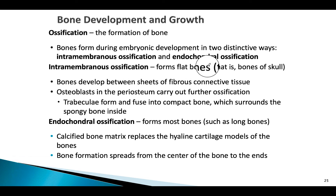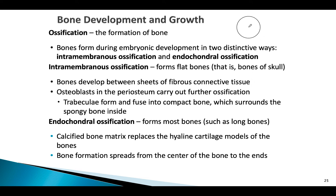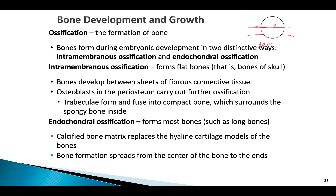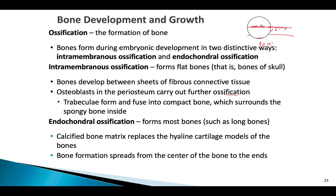In intramembranous ossification, which forms flat bones, osteoblasts carry out ossification between sheets of fibrous connective tissue. At the periosteum, osteoblasts drive the ossification process, ultimately creating trabeculae sandwiched between compact bone on either side — one on the outer surface and one on the inner surface, such as in the skull where the brain is located beneath.